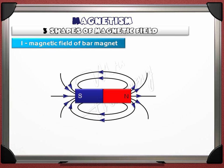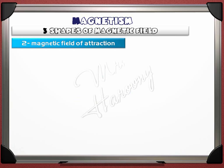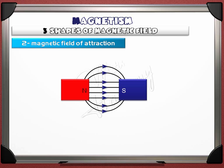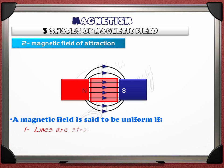The second magnetic field is the field of attraction — formed between two parallel opposite poles, a north facing a south. In this case, the magnetic field lines are straight, parallel, and equally spaced in the area between the poles; outside this area the lines are curved. The direction is still from north to south. The area exactly between the poles is a uniform magnetic field, where the lines are straight, parallel, and equally spaced.